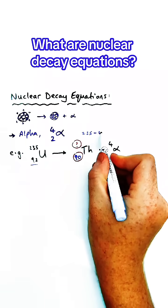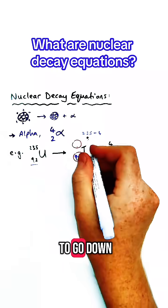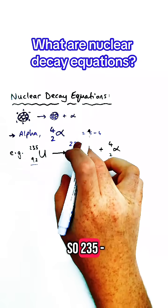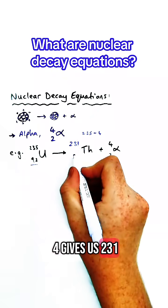For the mass number, that has to go down by 4 because an alpha particle has a mass number of 4. So 235 minus 4 gives us 231.